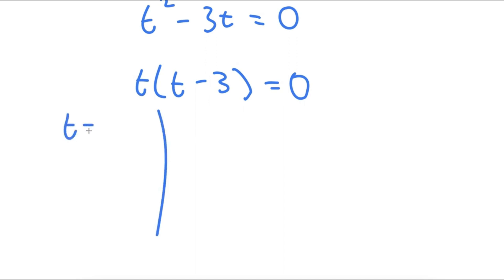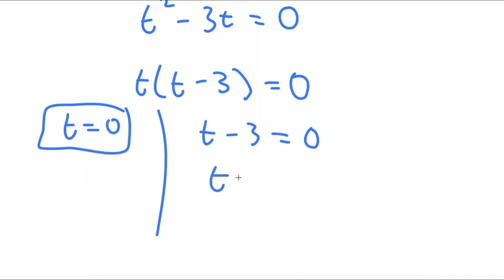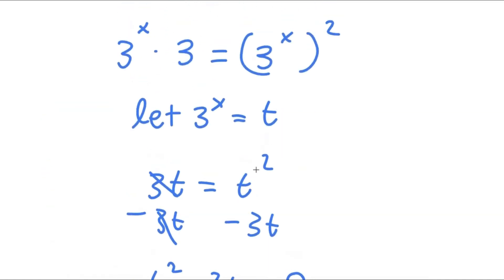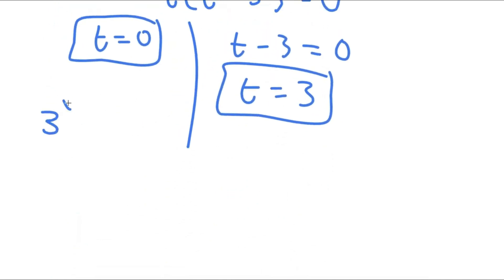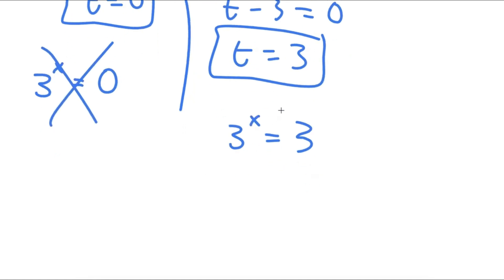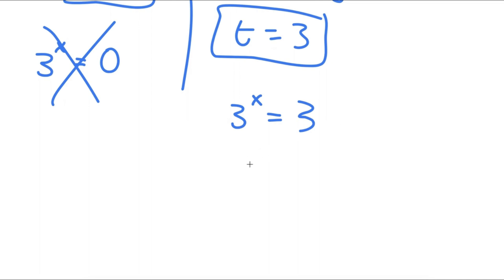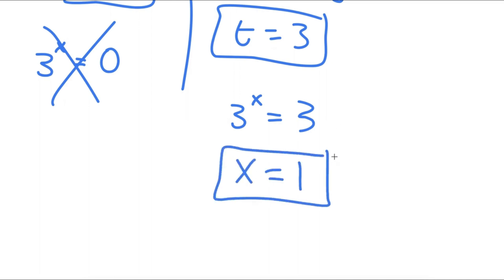This gives two equations: t equals 0, and t minus 3 equals 0, meaning t equals 3. Substituting back, 3 to the power of x equals 0 is impossible — nothing raised to any power equals 0. For 3 to the power of x equals 3, well, 3 to the power of 1 equals 3. So x is equal to 1, and this is my answer.